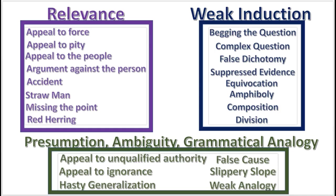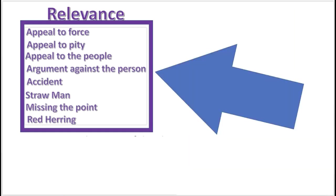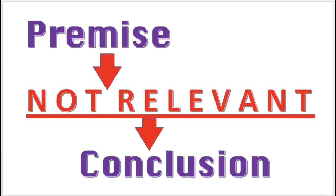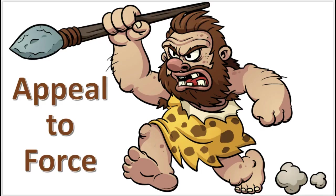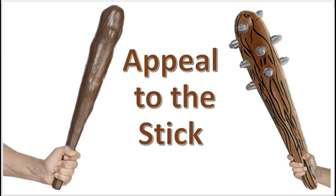These 22 informal fallacies can be divided into three categories. We're starting with fallacies of relevance, which means the fallacy occurs when the premise is not relevant to the conclusion. This video will explain the fallacy of appealing to force. Appeal to force is when threats are made by the arguer in order to advance the conclusion.